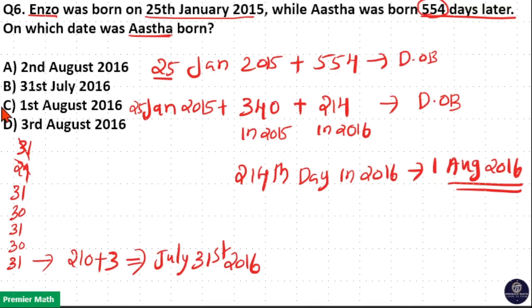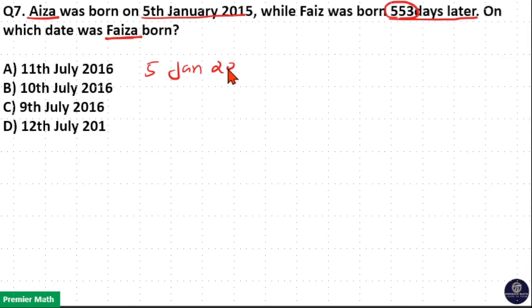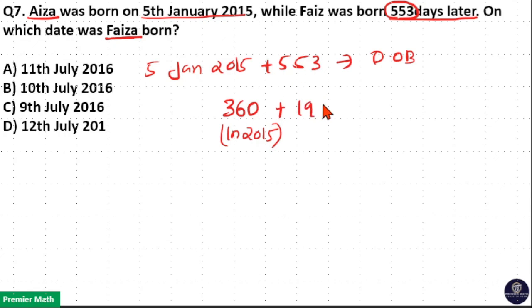Issa was born on 5th January 2015, while Fisa was born 553 days later. On which date was Fisa born? The difference between the date of birth of Fisa and Issa is 553 days. Same kind of question: 5th January 2015 plus 553 is the date of birth. Here 2015 has 365 days, out of which 5 days are already gone, which means 360 days are in 2015. That is 365 minus 5 equals 360 days, and the remaining days out of 553 are in 2016.